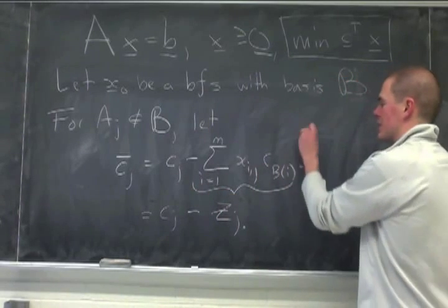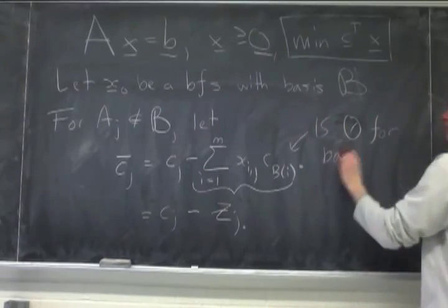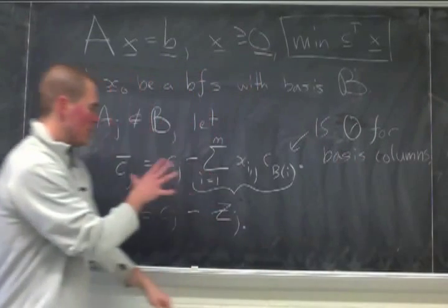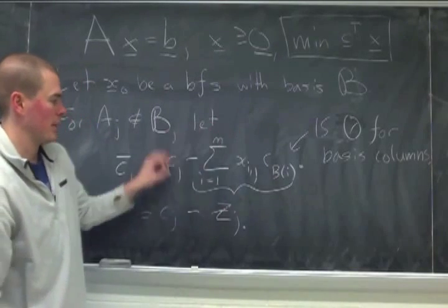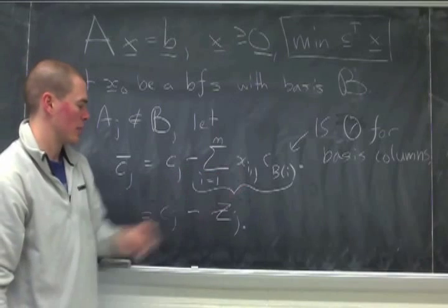Okay? So this is 0. So this relative cost is 0 for a basis column, the whole thing, not just this term. So this subtraction is 0.